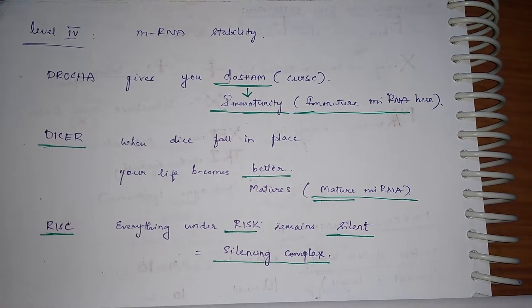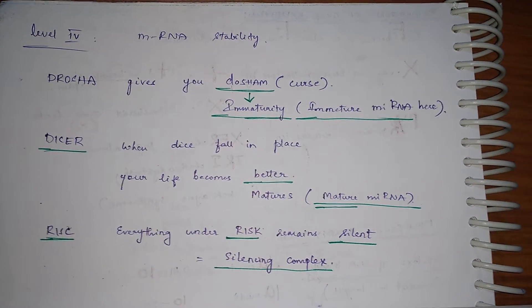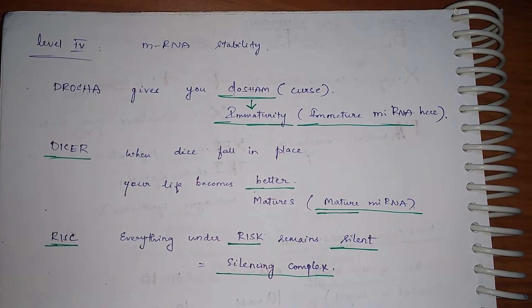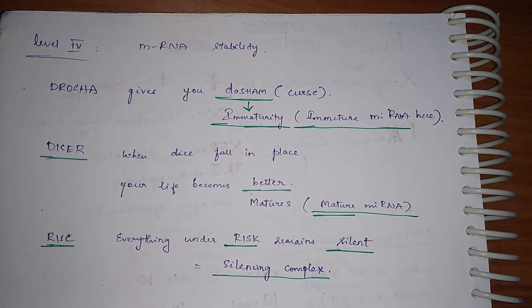Dicer - when dice fall in place, your life becomes better, that is it matures. So it stops the mRNA at mature mRNA level.